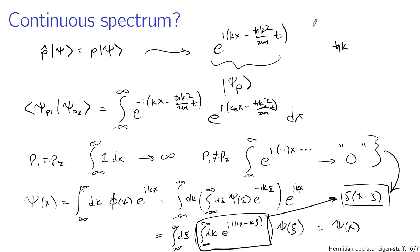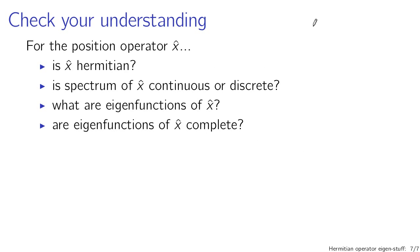To check your understanding, consider the position operator x-hat. Is it Hermitian? What is the spectrum like — continuous or discrete? What are the eigenfunctions of the position operator? And do those eigenfunctions form a complete basis? Thinking along those lines should help solidify this notion of the mathematical formalism we've been working with in the context of Hermitian operators.